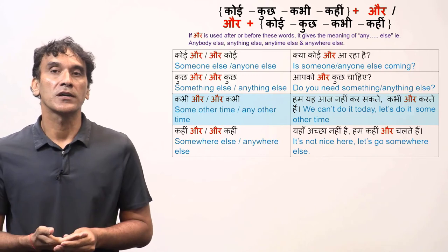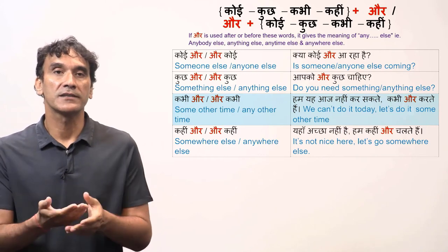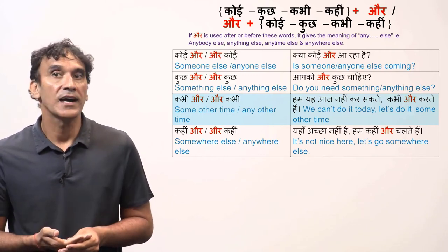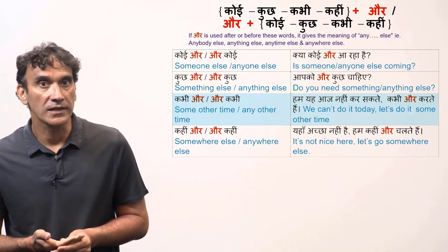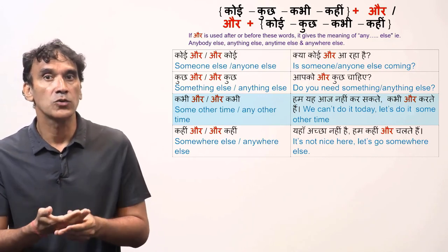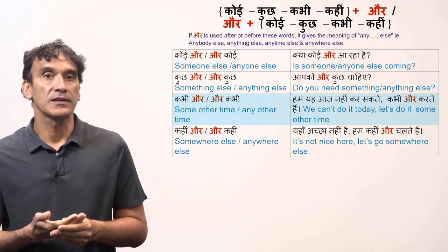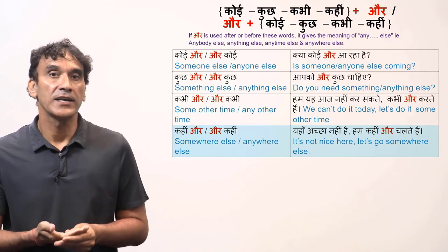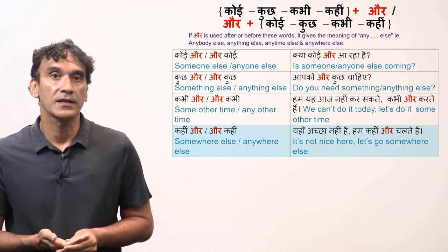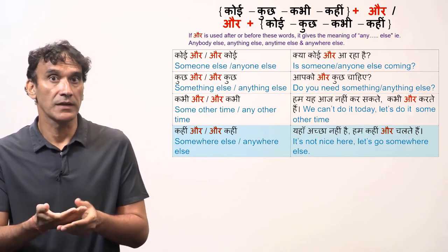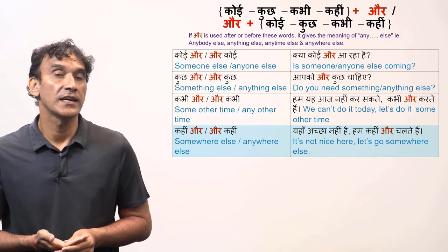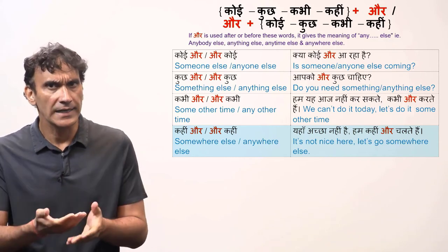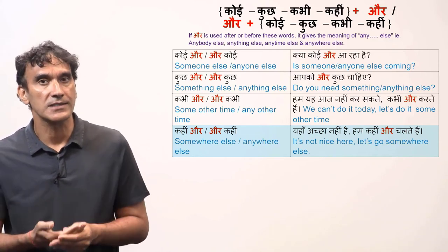Kabhi aur or aur kabhi means some other time or any other time. We cannot do it today — let's do it some other time. And finally, kahin aur or aur kahin means somewhere else or anywhere else. It is not nice here — let's go somewhere else.